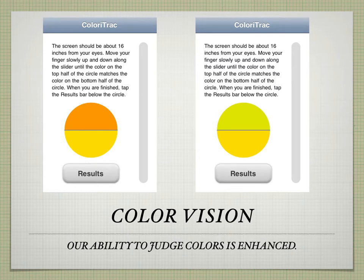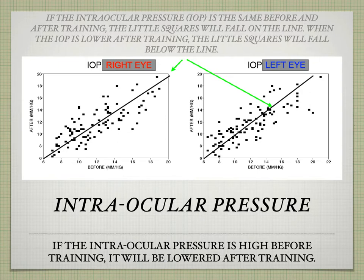Color vision is another aspect of our vision, and we can test color vision and in some cases correct color vision defects. In the last podcast we discussed glaucoma, where eye pressure is very high. These graphs illustrate that after biofeedback training we can actually lower eye pressure and in some cases eliminate the diagnosis of glaucoma.